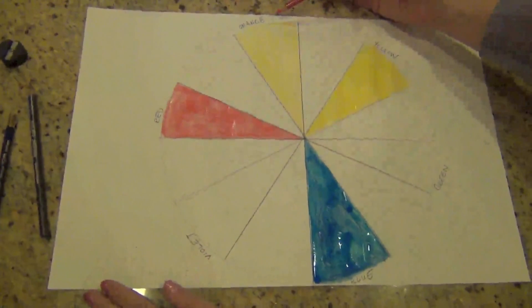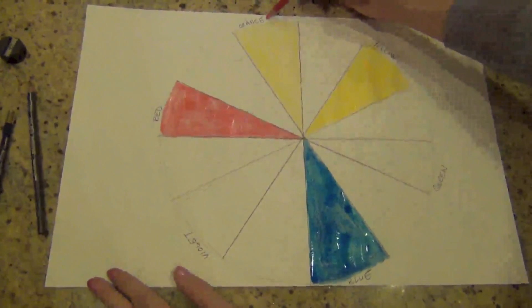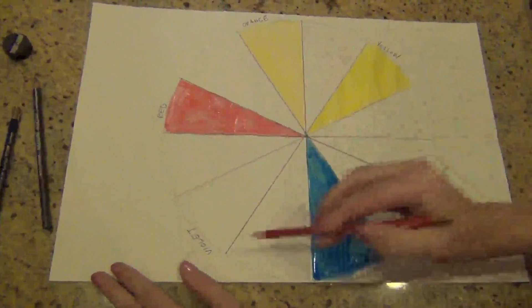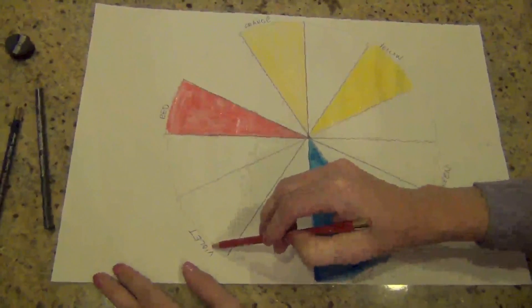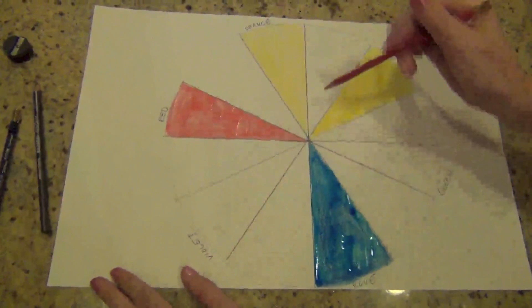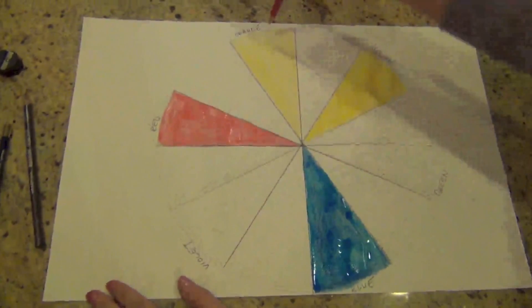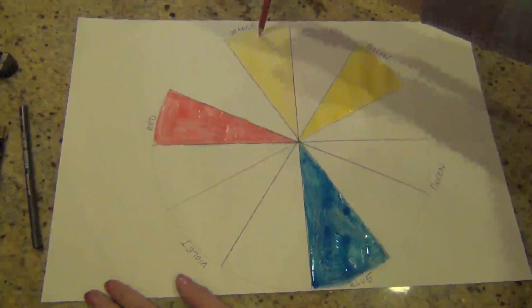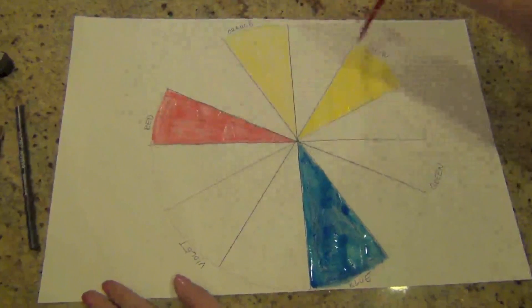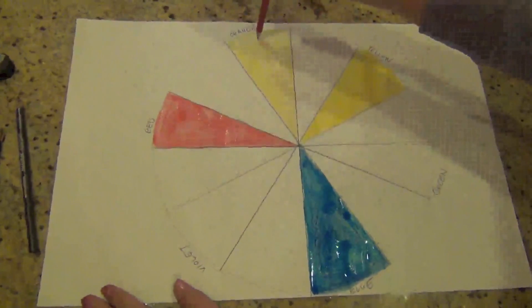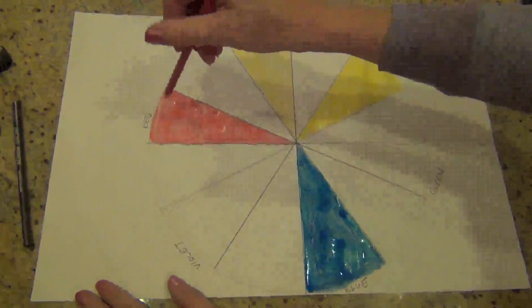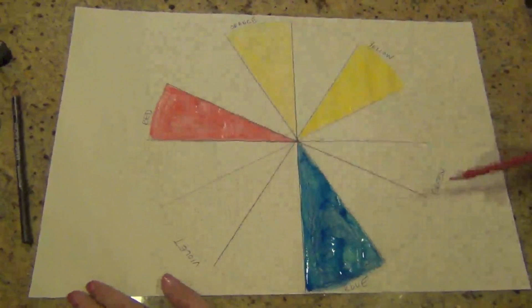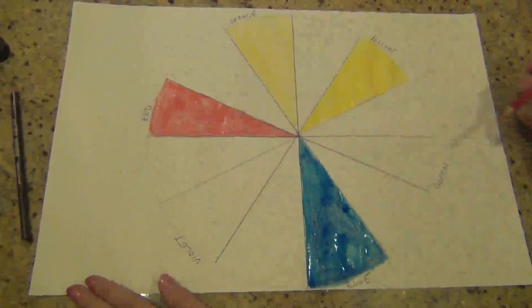So I'm going to create the secondary colors now, which are orange, green, and violet or purple. You can call it either one. Those secondary colors will be located directly in between your primary. So skip an empty space and make your secondary. Skip an empty space over here and make your secondary and then green. So make sure that you're doing this correctly.